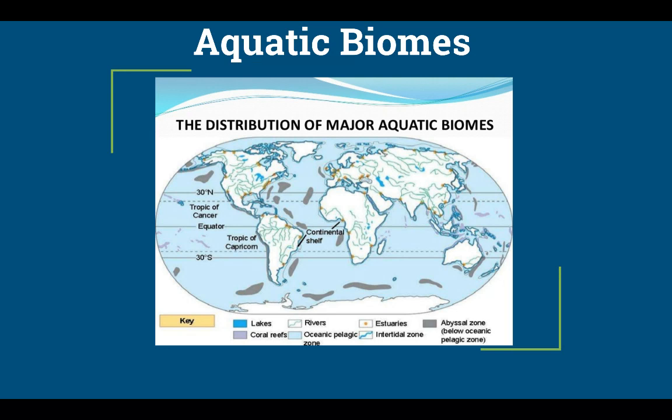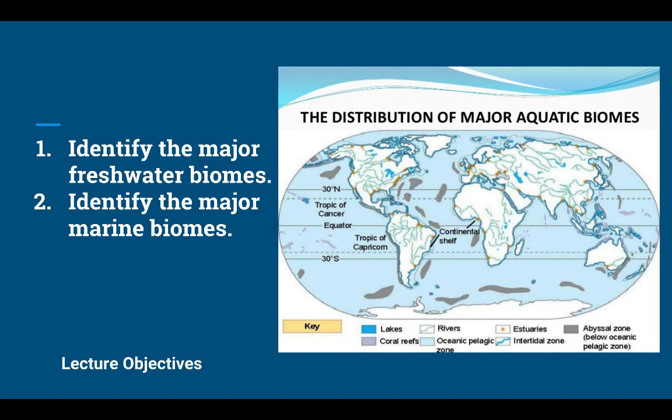There are two broad categories of aquatic biomes. There's freshwater, which includes streams, rivers, lakes, and wetlands. Then there's marine, where salt water is involved — shallow marine areas like estuaries and coral reefs, as well as the open ocean. The objective of this lecture is to look at those two major biomes and the characteristics of each.